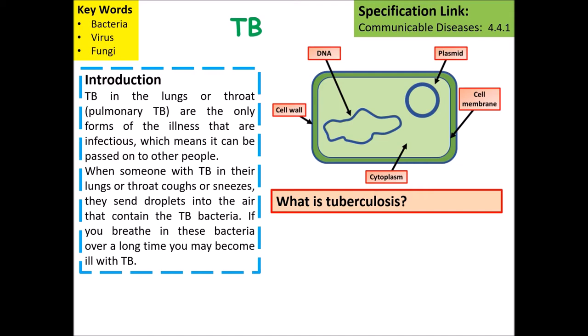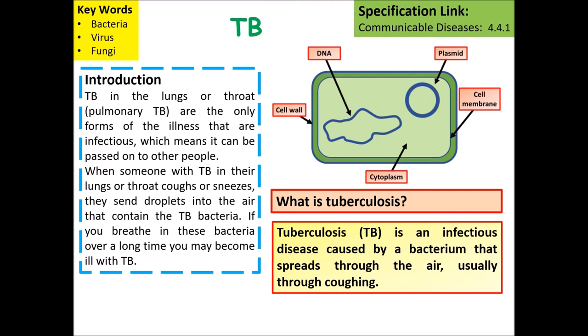The first disease we're going to look at is tuberculosis. TB in the lungs or throat are the only forms of illness that are infectious, meaning they can be passed from person to person. When somebody with TB in their lungs or throat coughs or sneezes, they send droplets into the air which can contain the tuberculosis bacteria. If you breathe in these bacteria over a long period of time, you can become infected. Tuberculosis is an infectious disease caused by bacteria that usually spreads through the air, usually through coughing.